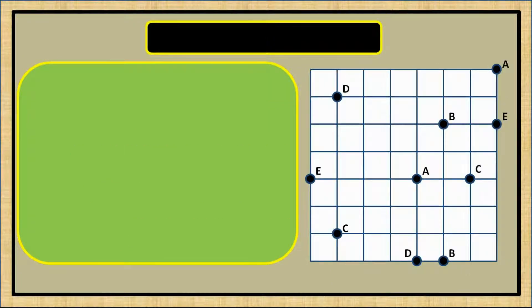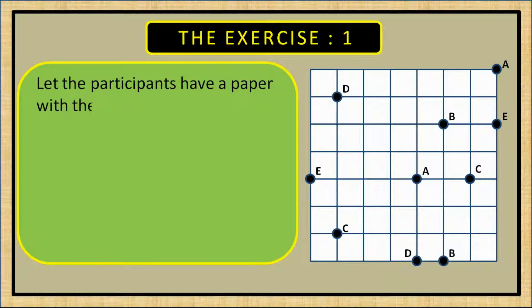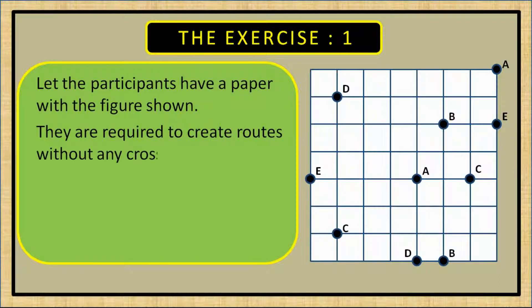There are two exercises. Let's see exercise one. Let the participants have a paper with the figure shown. They are required to create routes without any crossing to travel from A to A,